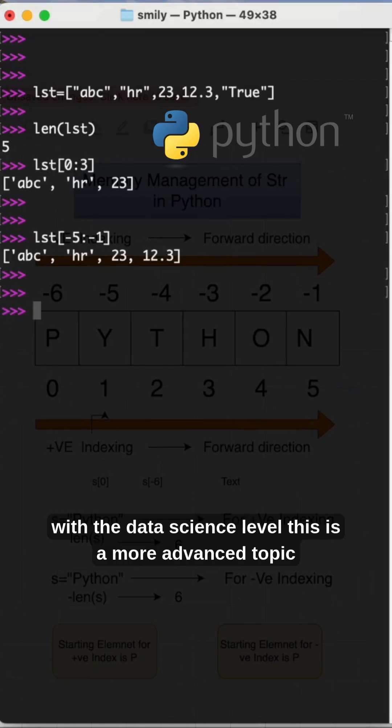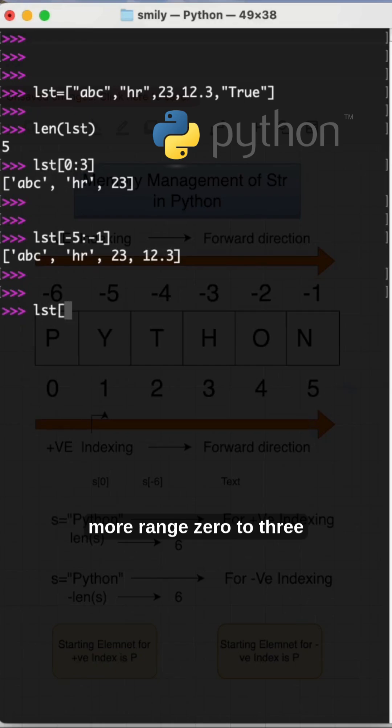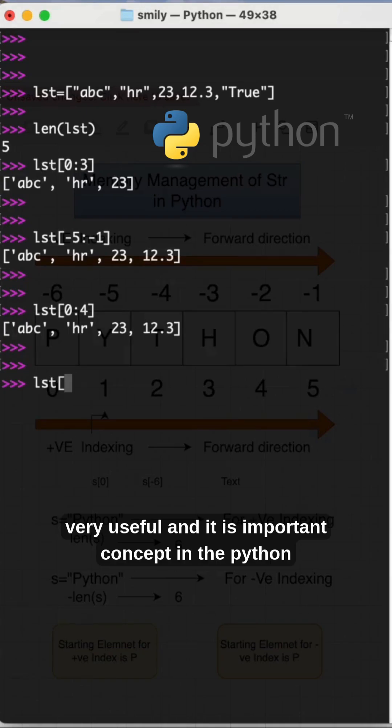I want to get one more range 0 to 3, already provide 0 to 4 I'm getting. So this is the slicing which you will perform, slicing operation in Python. This is very very useful and it is important concept in the Python slicing operations. I want to get minus 3 to minus 2, so what is this? 23, only single value.